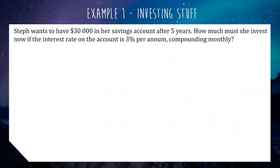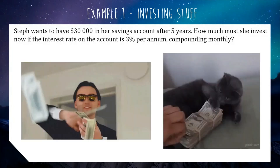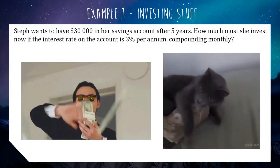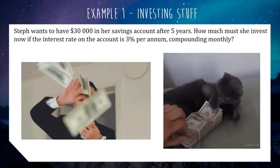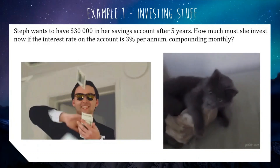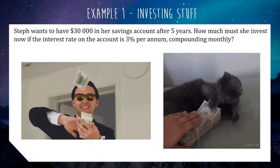For our first example, we're looking at the mathematics of investing. We have: Steph wants to have $30,000 in her savings account after five years. How much must she invest now if the interest rate on the account is 3% per annum compounding monthly? So Steph needs to figure out the maths to determine how much to invest now so that she ends up with $30,000 after five years.